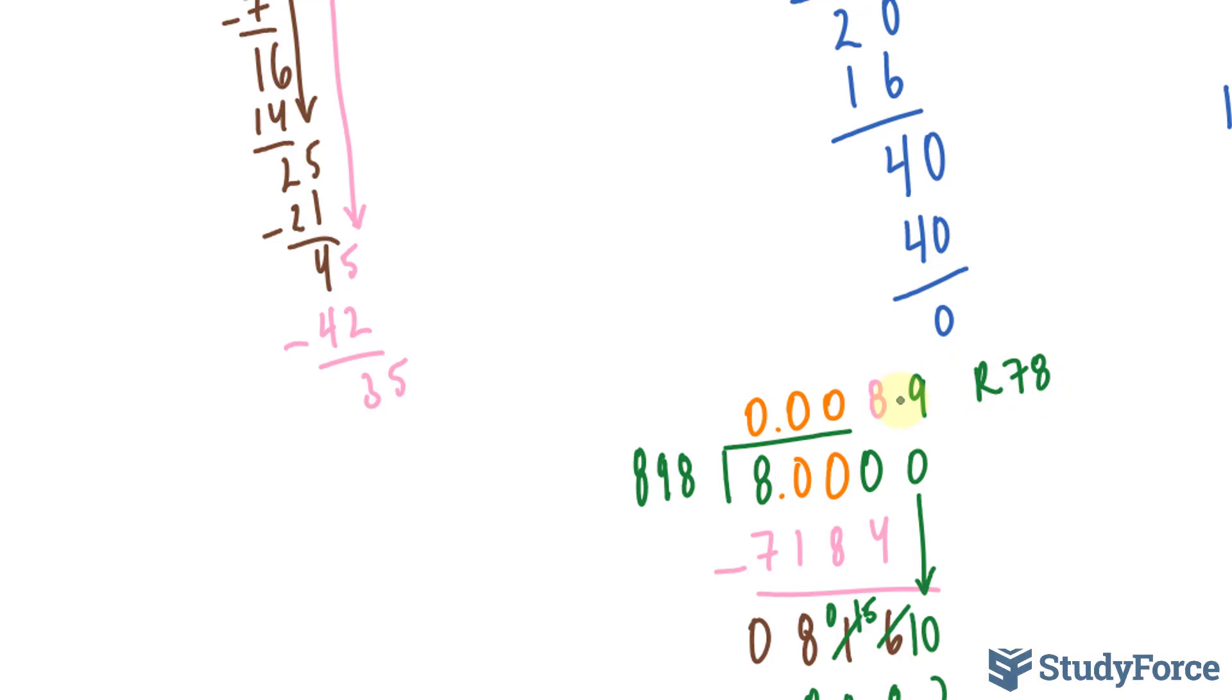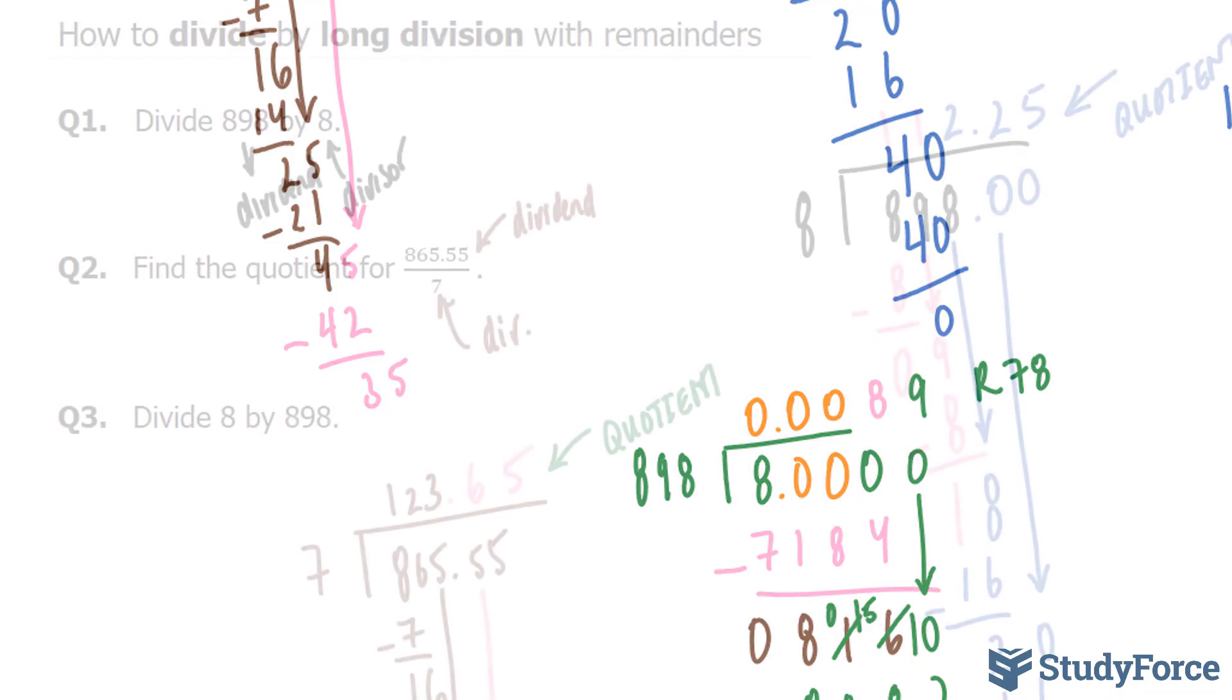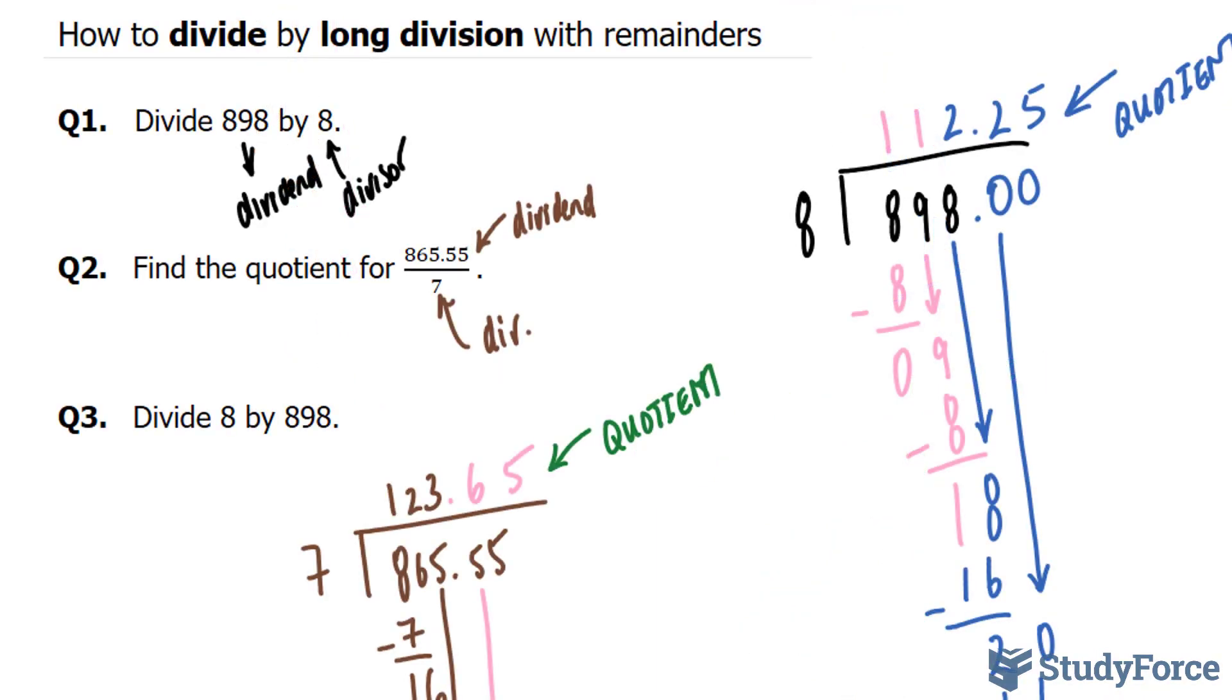Technically, you would have to keep going, but this is good enough. And so there you have it. That is how to divide by long division with remainders.